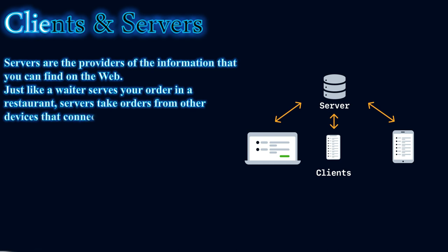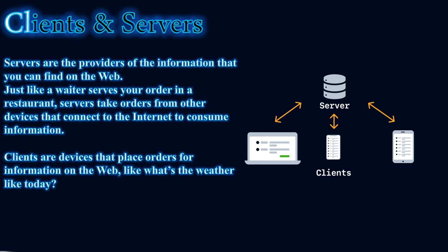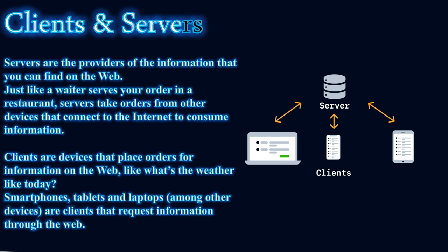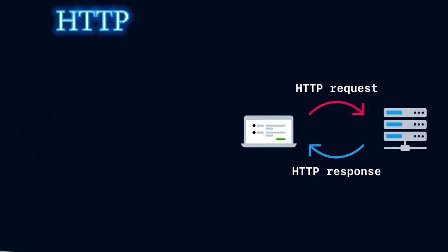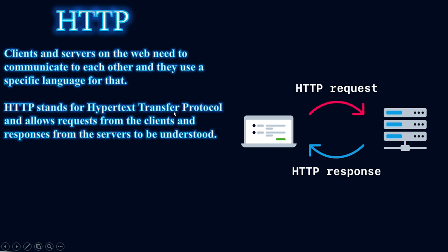Servers are the providers of information on the web — just like a waiter serves your order in a restaurant, servers take orders from other devices connected to the internet. Clients are devices that place orders for information on the web, such as asking 'what's the weather like today?' Smartphones, tablets, and laptops are clients that request information through the web. Clients and servers communicate using HTTP — Hypertext Transfer Protocol — which allows requests from clients and responses from servers to be understood.